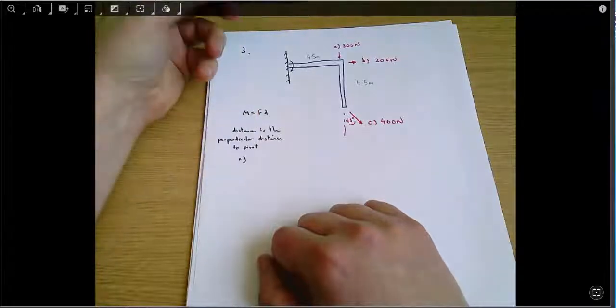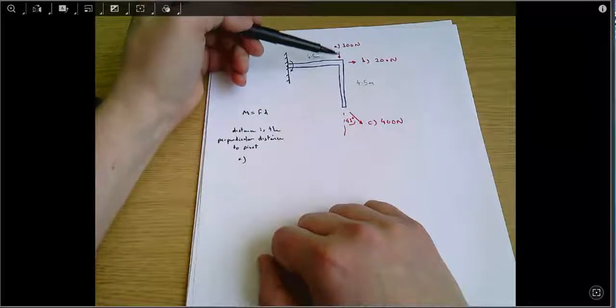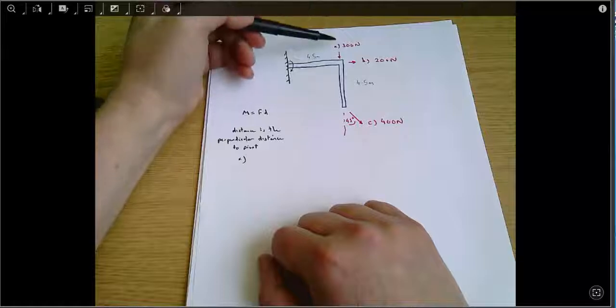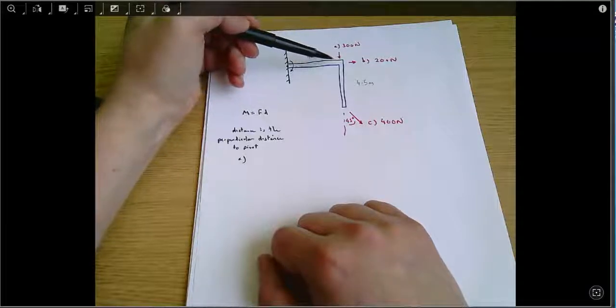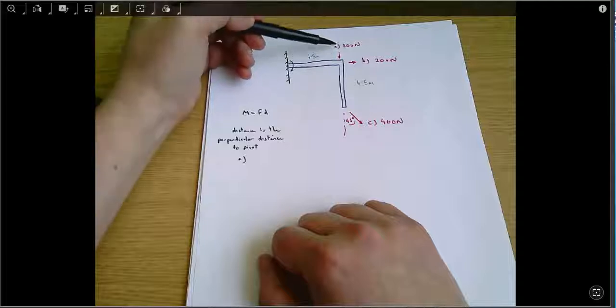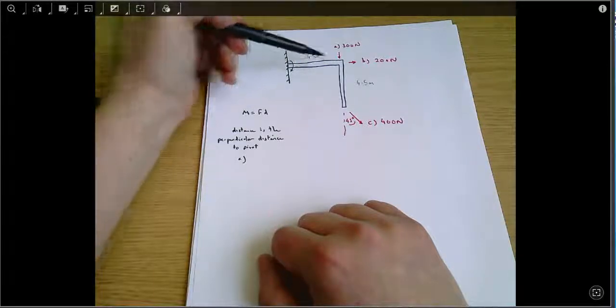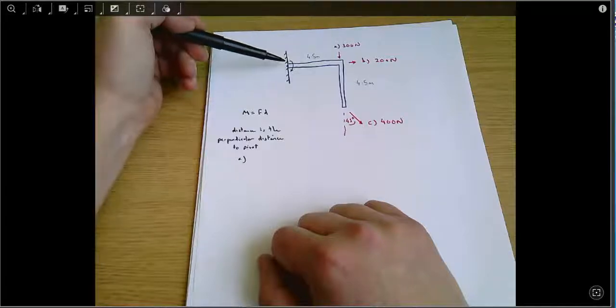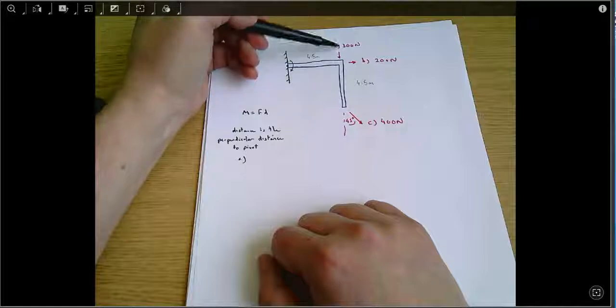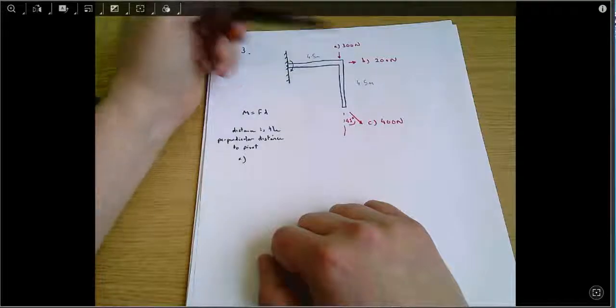So one of the things that I've said in lectures, you can imagine that the line of the force goes on forever. Where can you draw a right angle and another line going back to the pivot? So for A, that's this length here that I'm indicating is the perpendicular distance back to the pivot because the force is acting downwards like so.